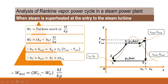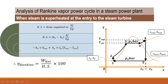Heat is supplied from point 2 through to point 4 — sensible heat (2 to 3), latent heat (3 to 3'), and heat of superheat (3' to 4). So heat supplied Hs = H4 − H2, where H4 is the specific enthalpy of superheated steam: Hg + Cp·(T_sup − T_sat). Once the heat supplied is known, Rankine cycle efficiency is calculated as net work divided by heat supplied, multiplied by 100. This gives the efficiency of the Rankine cycle when steam is superheated at the entry to the steam turbine.